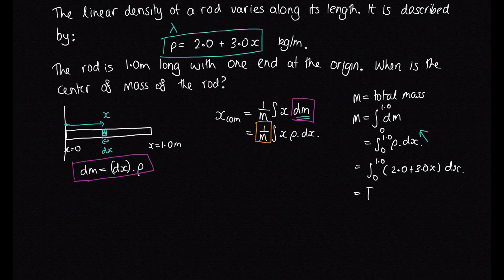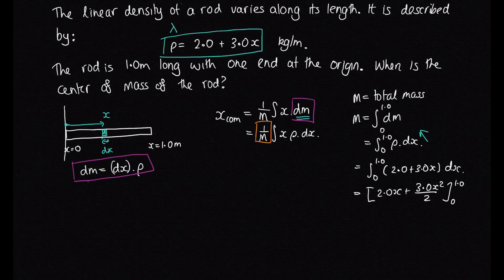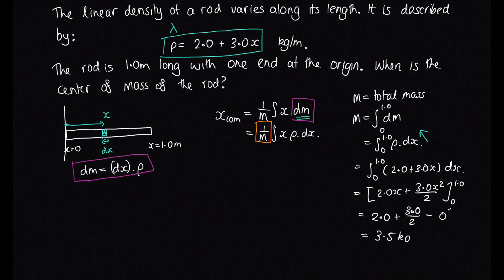Now we integrate: the integral of 2 gives 2x, and the integral of 3x gives 3x²/2, evaluated from 0 to 1. This equals 2×1 + 3×1²/2 = 2 + 1.5, and substituting 0 gives 0. So the total mass of the rod is 3.5 kilograms.